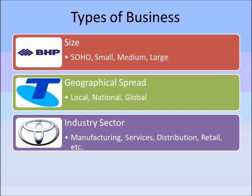Whether they operate in distribution, which is basically transporting and moving products around — for example, Lindsay Fox Trucking. Whether they operate in retail, which is basically selling products in storefronts or online — in the aforementioned examples of David Jones or Myer. Or eBay, which is an online retail store.